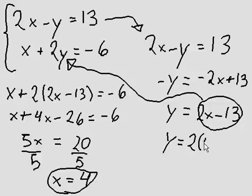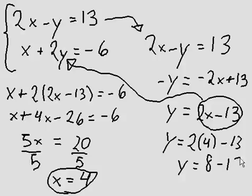So 2 bracket 4 minus 13. y equals 8, 2 times 4 of course. 8 minus 13. y is negative 5.